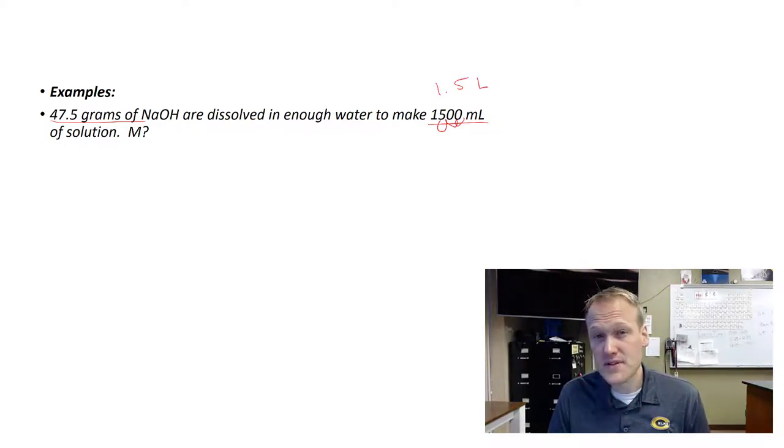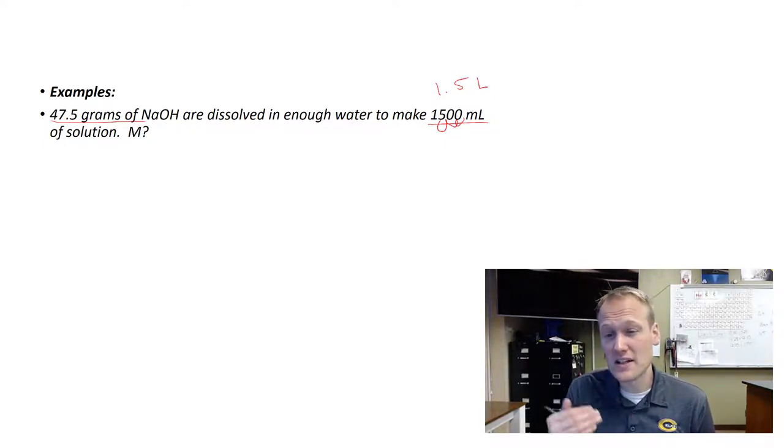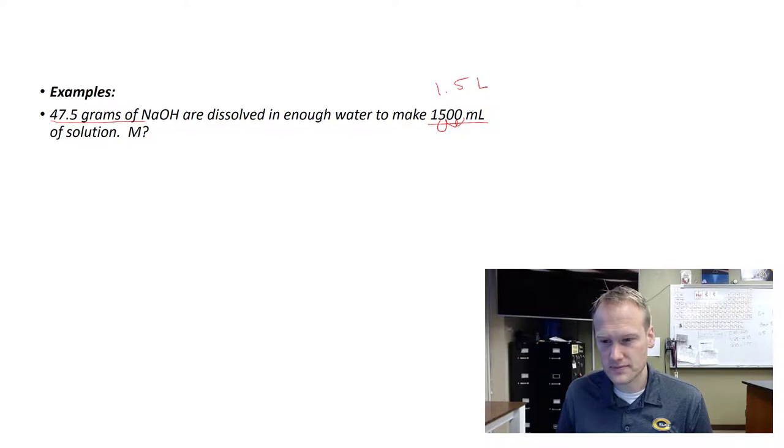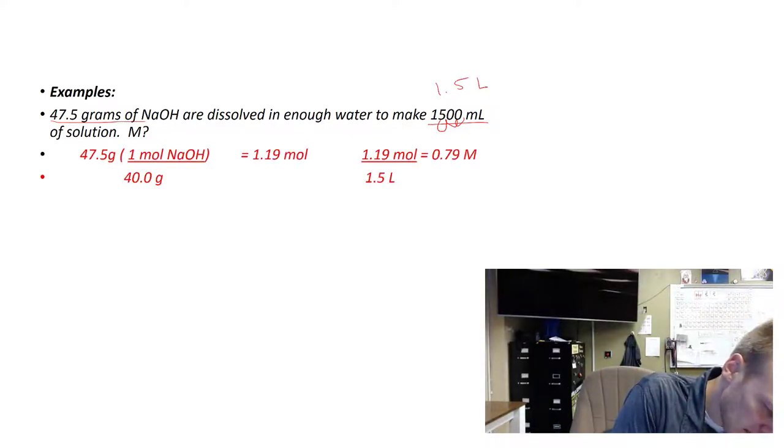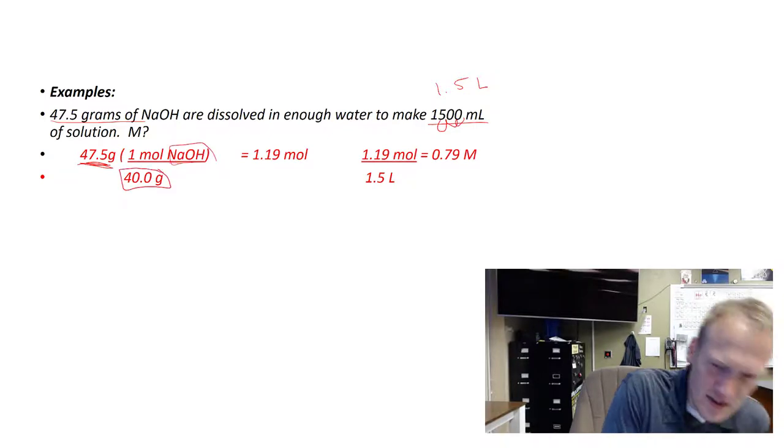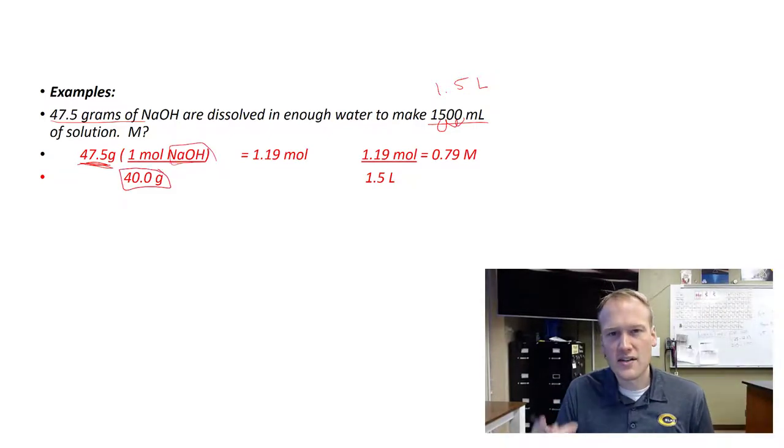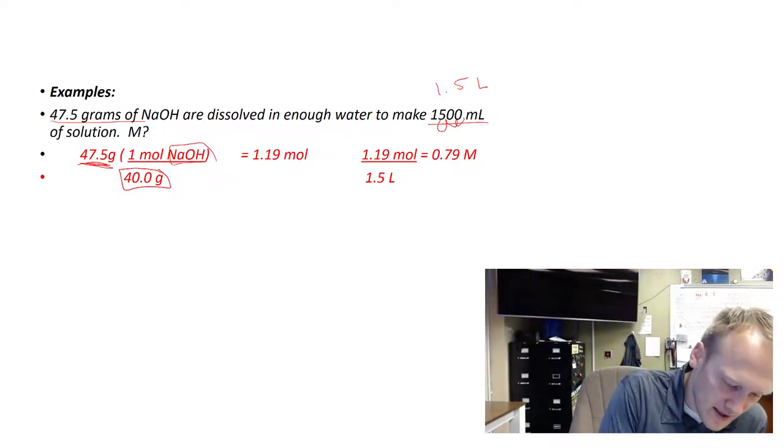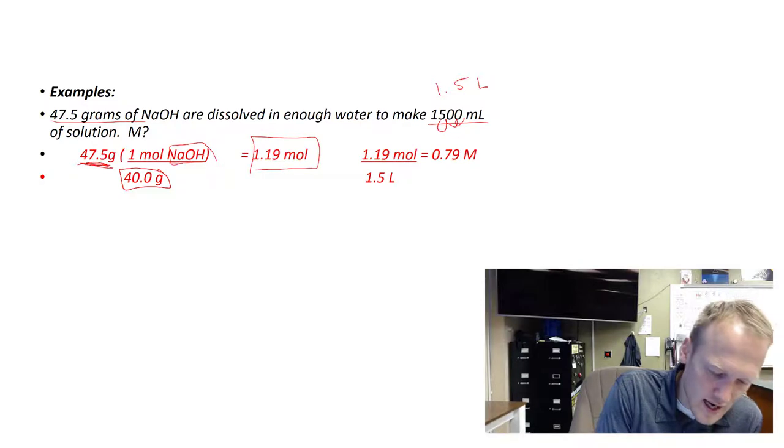Then we need to convert grams to moles. That means we need to divide by our molar mass. So in this problem, we've taken the 47.5 grams and divided by the molar mass of NaOH. That means we took a sodium, an oxygen, a hydrogen, their masses on the periodic table, added them all up and it was 40, and that gave us 1.19 moles.